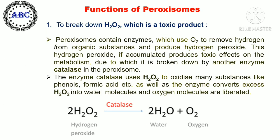The first important function of peroxisomes is to break down hydrogen peroxide, which is a toxic product. Peroxisomes contain enzymes that use oxygen to remove hydrogen from organic substances and produce hydrogen peroxide. If hydrogen peroxide accumulates, it produces toxic effects on metabolism, so it is broken down by the enzyme catalase within the peroxisome.